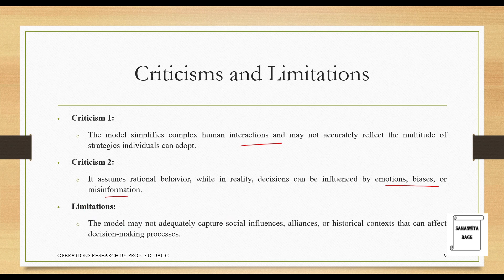Limitation 3: the model may not adequately capture social influences, alliances, or historical contexts that can affect decision-making processes. This game theory model has not taken into account the social influences a person can be under, or the alliances that two people can make. For example, one person initially being a Hawk and another a Dove could suddenly form an alliance because they understand that fighting is not going to help.